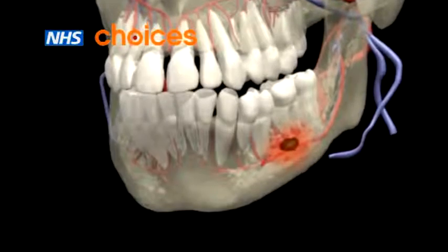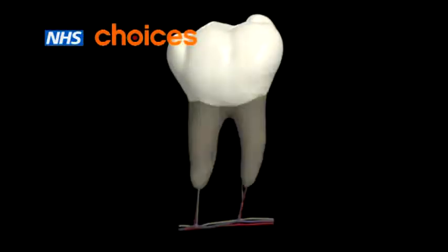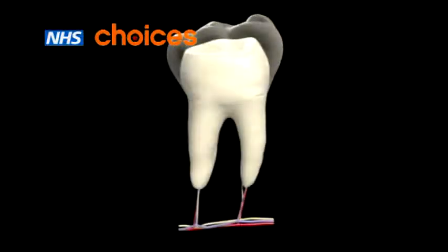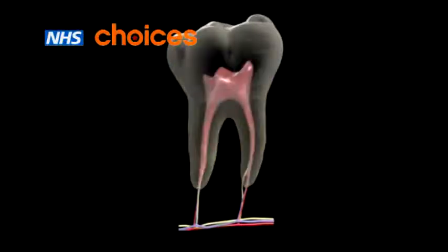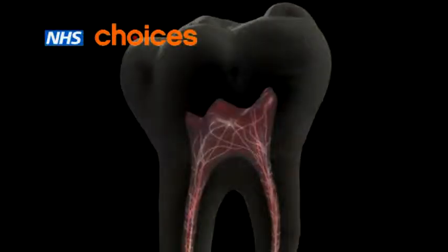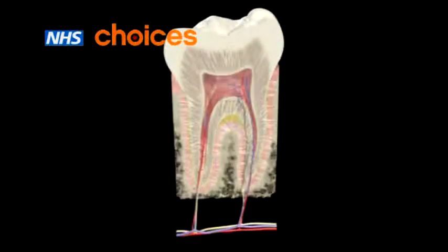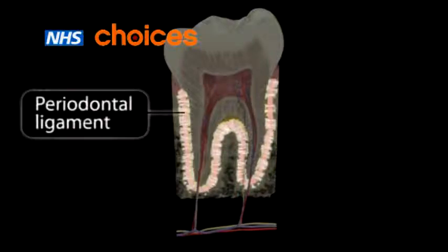How does this occur? Your tooth is made up of a hard white protective layer, the enamel, which covers and protects a softer yellow tissue called dentin. At the very centre of the tooth is the soft pulp, where blood vessels and nerves are found. Your tooth is attached to the jaw via a strong ligament, called the periodontal ligament.